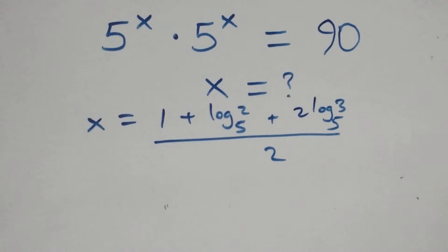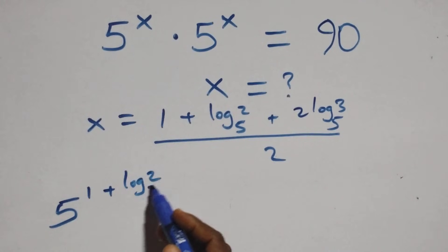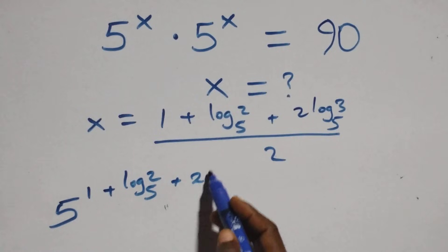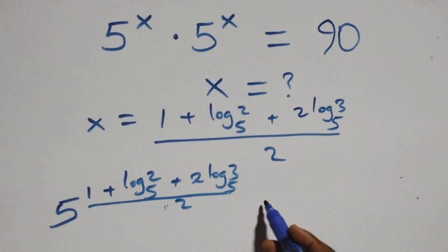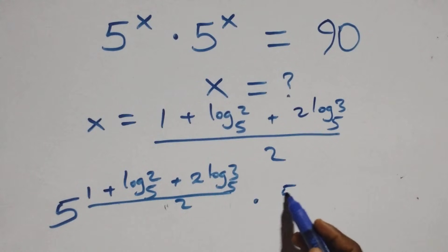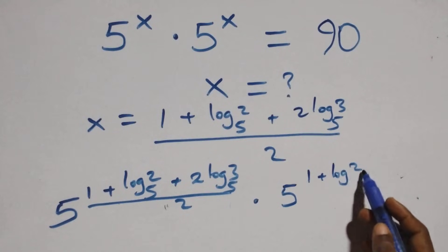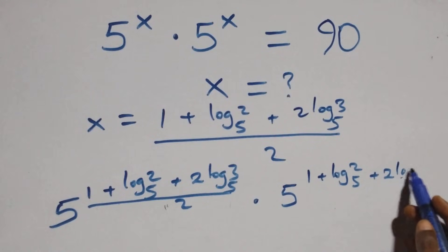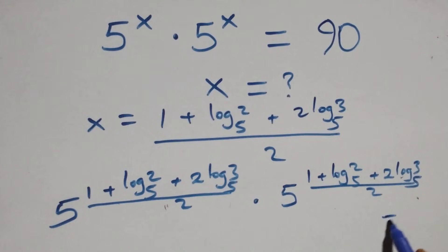We substitute x equals (1 plus log₅2 plus 2 log₅3) all over 2. So the expression becomes 5 raised to power 2 times that value, which should equal 90 on this side.